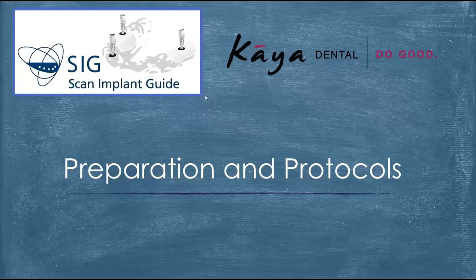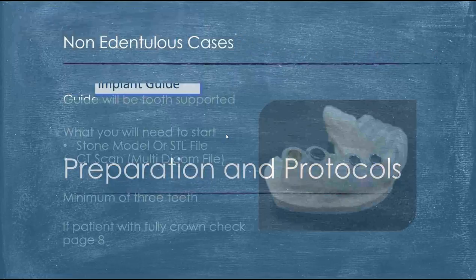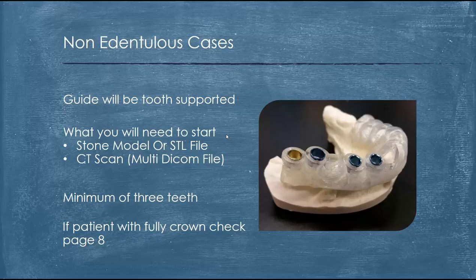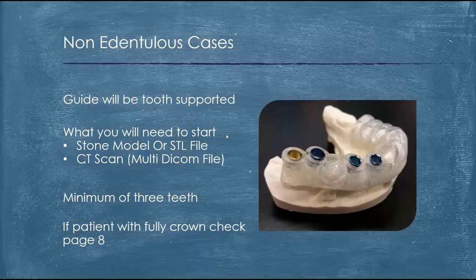To start off, we're going to go over what we need for a non-edentulous case. For a non-edentulous case, the guide is teeth-supported. Usually for non-edentulous patients, as long as they have a minimum of three teeth, it would be considered a non-edentulous case. All we would need to start is a stone model or the STL file, and a CT scan in multi-DICOM file format.